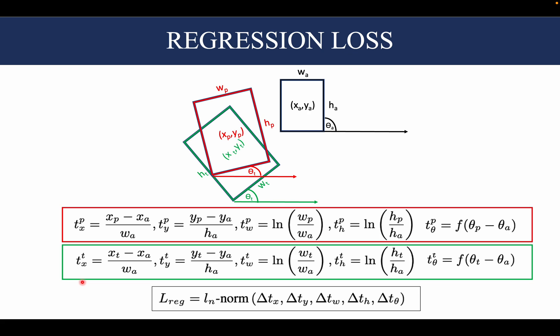Delta tx here corresponds to the ln norm considering txp and txt as the parameters. This ln norm could be an L1, L2, or the smooth L1 loss that we have seen before.